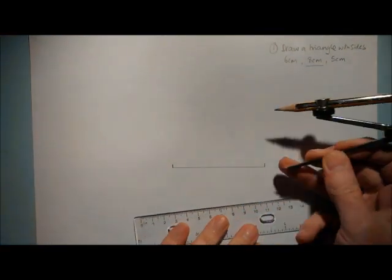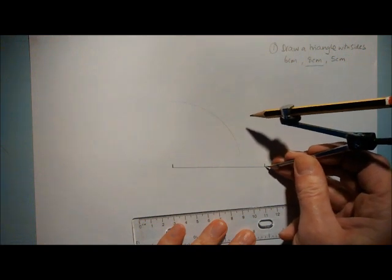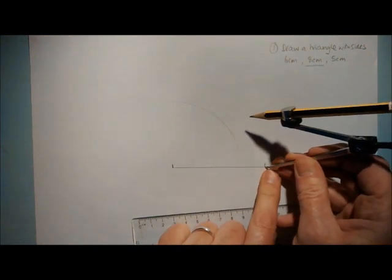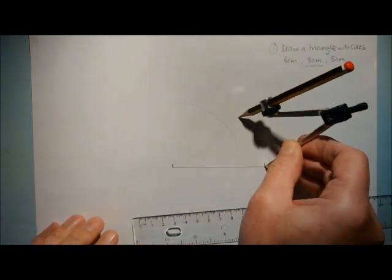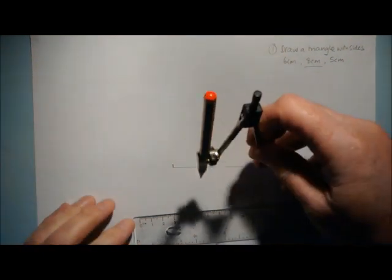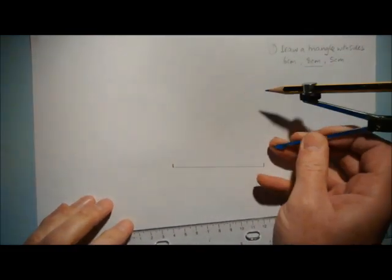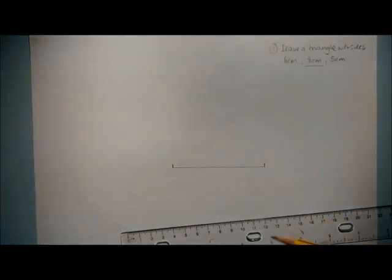Then again use this part of the finger just to rest that on the page. Ease the point down to the point where it needs to be. There we go on the end of that line. And again just pull that round nice and easily. Always pull the compass round because it's much easier to get a nice accurate arc in that way.